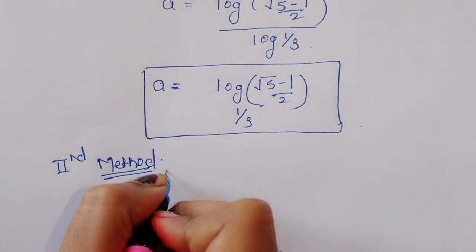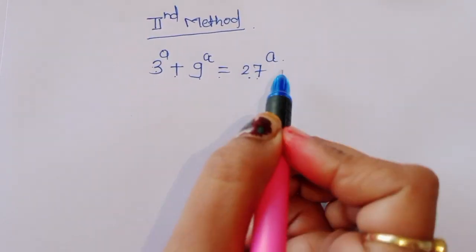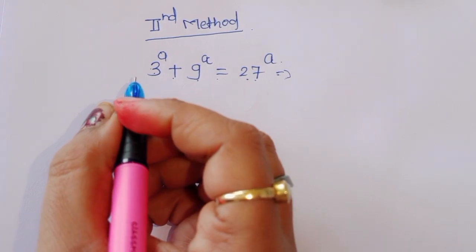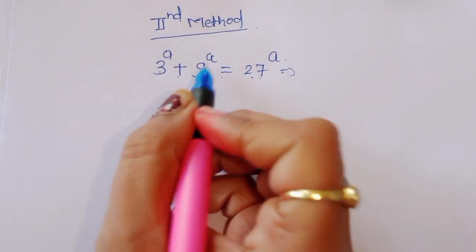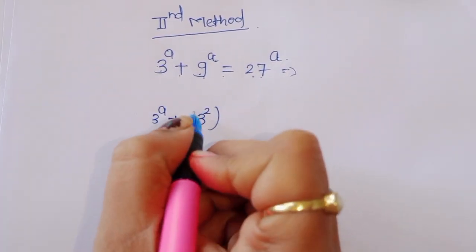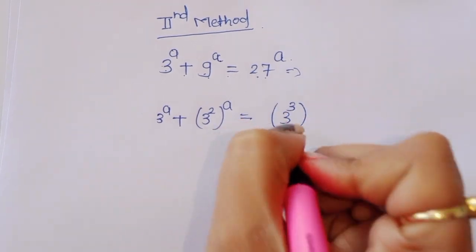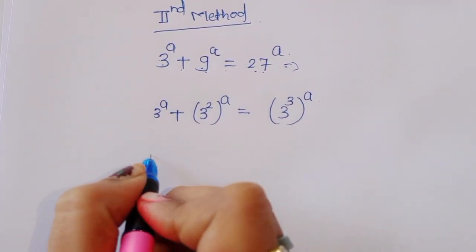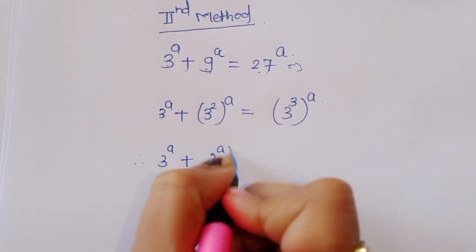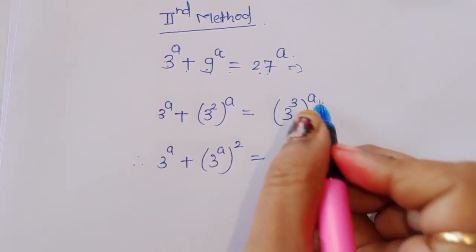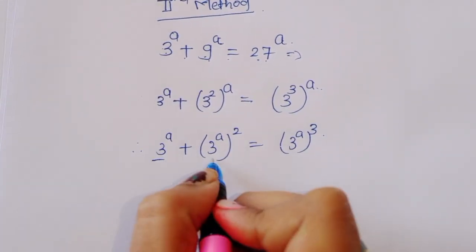Now we are using the second method. The equation is 3 power a plus 9 power a is equal to 27 power a. We can write 9 as 3 squared, so 9 power a is 3 power 2a, and 27 power a is 3 power 3a. Therefore 3 power a plus 3 power 2a is equal to 3 power 3a.